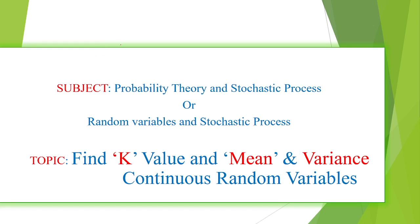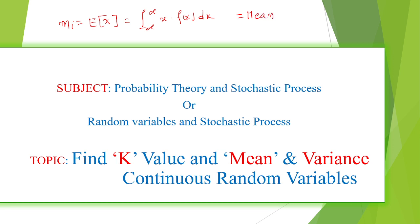I am going to explain about mean value and variance for continuous random variables — how to find k, mean, and variance. The mean, also called the first averaging process, is denoted with m or m1, equal to E(x) or the expectation of x, which equals the integral from minus infinite to plus infinite of x times f(x) dx. This is the mean or average for continuous random variables.